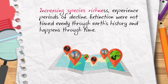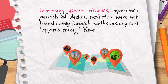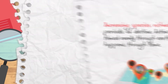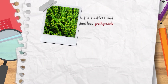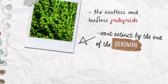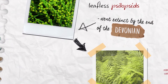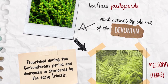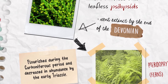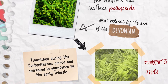Increasing species richness experiences periods of decline. Extinctions were not timed evenly through Earth's history. The early vascular plants — the rootless and leafless psilopsids — went extinct by the end of the Devonian and were replaced by Pteridophyta, which flourished during the Carboniferous period and decreased in abundance by the early Triassic.